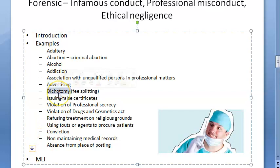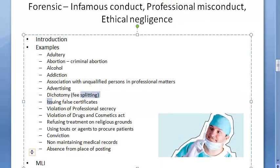Beyond the six A's, there are other forms of infamous conduct. Dichotomy means fee splitting — receiving or giving commission — which is not permitted. Issuing false certificates is also infamous conduct and professional misconduct.